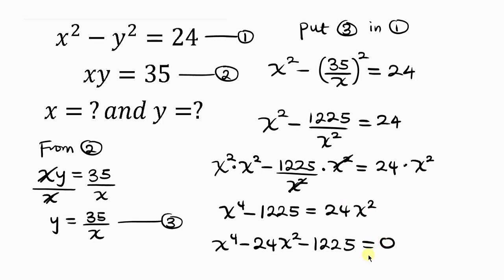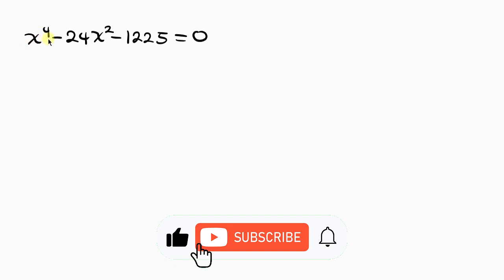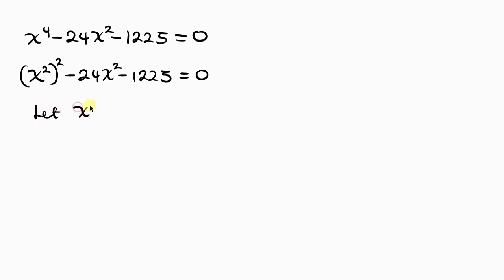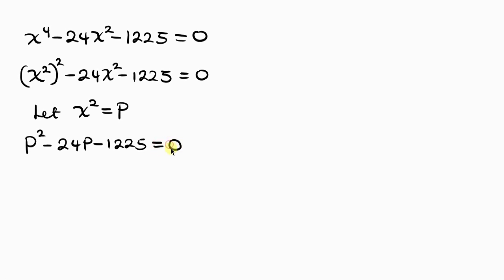Notice that x to the fourth can be written as (x squared) squared, since the powers multiply — 2 times 2 gives 4. So we have (x squared) squared minus 24(x squared) minus 1225 equals 0. This is a quadratic equation in x squared. Let p equal x squared, so wherever we see x squared we put p. This becomes p squared minus 24p minus 1225 equals 0.